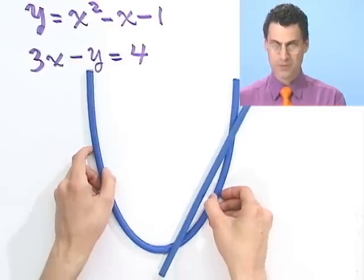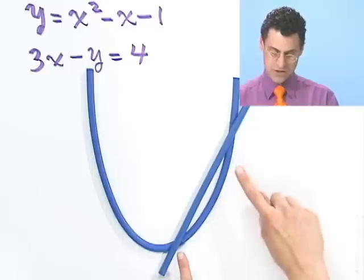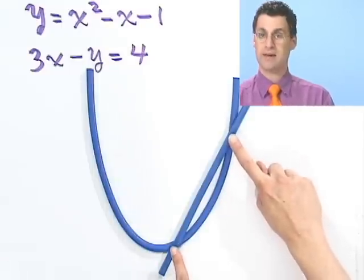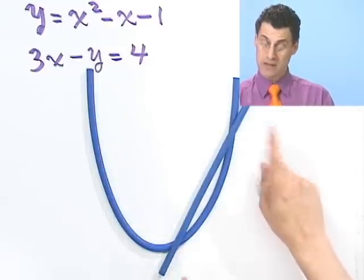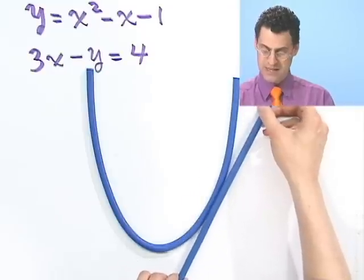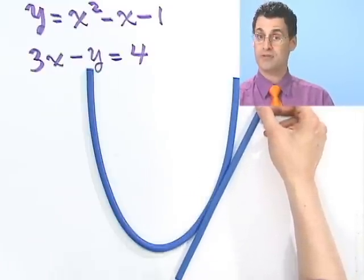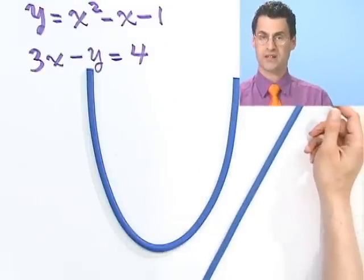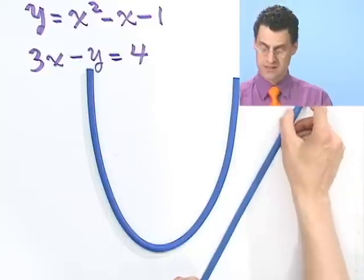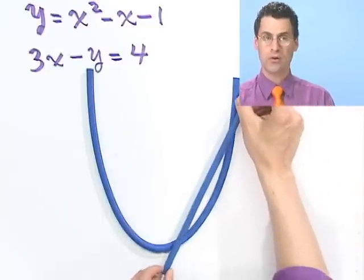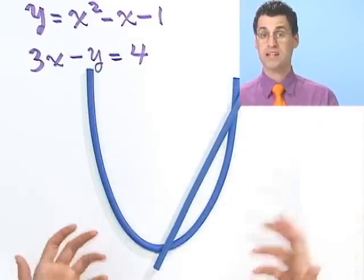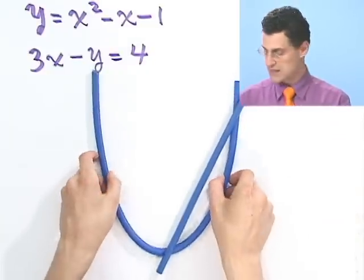So you see that it might not be too surprising that we may in fact get two points of intersection. We might get two answers on this one. Now we may only get one. For example, maybe it just grazes it, so we might have only one solution, or we might have no solutions like this. So we might have no solutions to this system, exactly one, or we may have more than one. In any case, those are the possibilities. Let's take a look and see what actually happens.